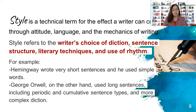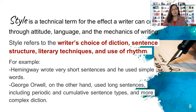For example, Hemingway wrote very short sentences and used simple words, while George Orwell used long sentences — including periodic and cumulative sentence types — and a more complex diction. While you may have a personal style like Hemingway or Orwell, the style could also change depending on the publication. If you want to have a more diverse audience and write for more publications rather than just one, it's always good to be able to change your style to suit the publication you are targeting.